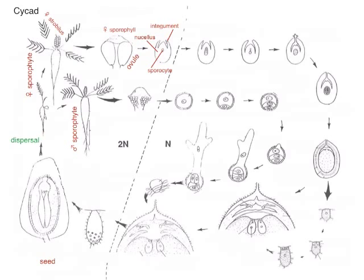That megasporocyte undergoes meiosis and forms four megaspores. Three of those megaspores disappear, and then there's one functional megaspore inside of the ovule.